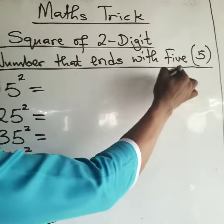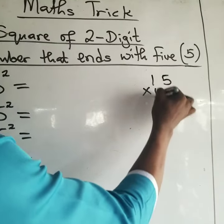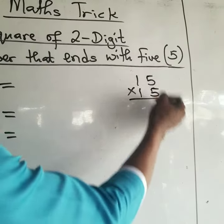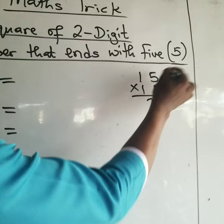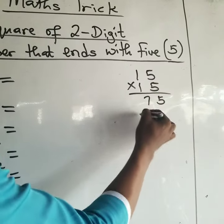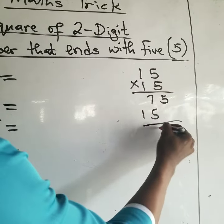So instead of you doing it this way or you start looking for calculator—15 times 15, you know: 25, 5, you carry two, 75, then five, then you have one, you now add, they give you 225.